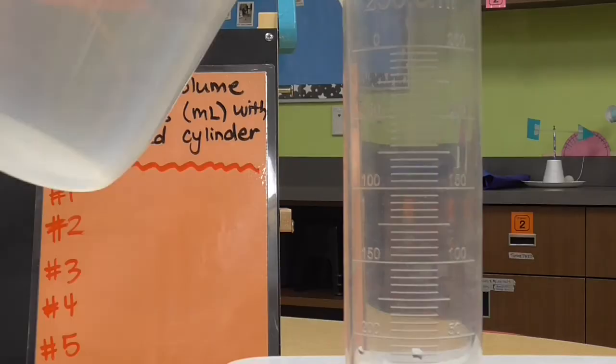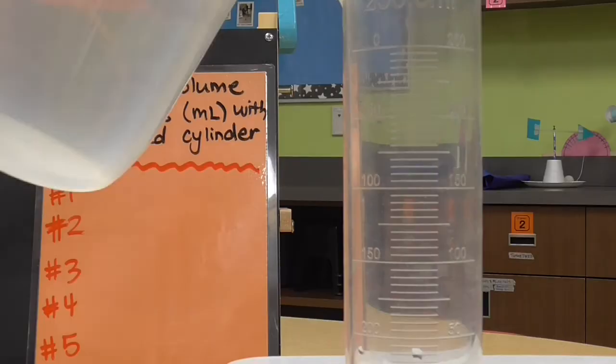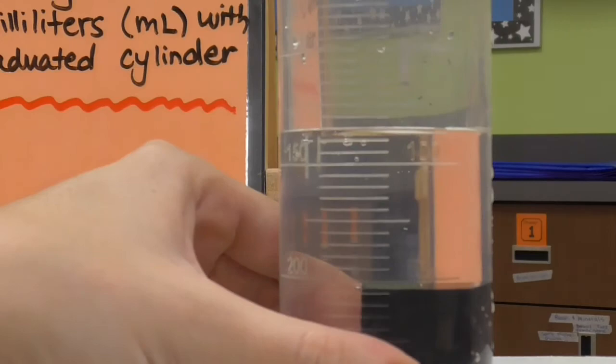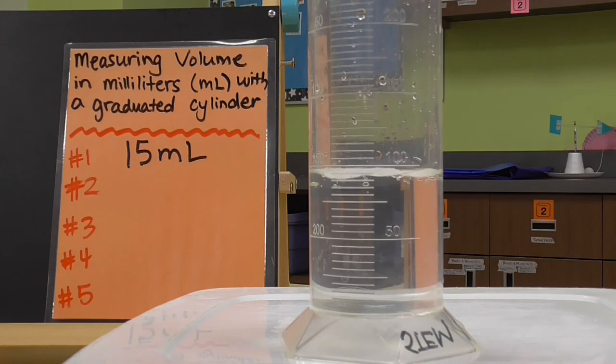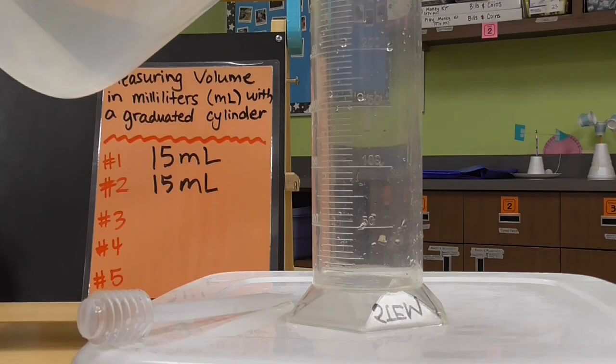So now that we know how volume works, let's just fast forward so that we can see all five of those objects being tested and measured for their volume, so we can get one step further to finding out the density of our mystery objects.